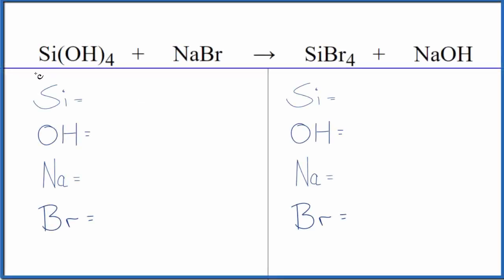Let's balance the chemical equation Si(OH)₄ plus NaBr. So first off, let's count the atoms up.